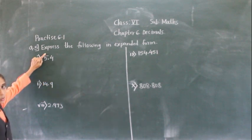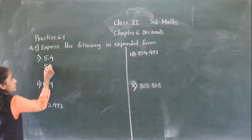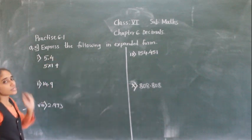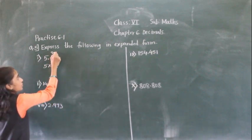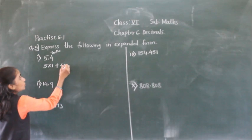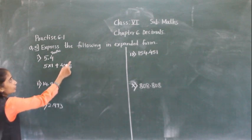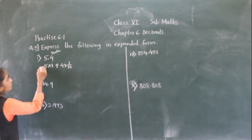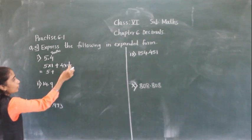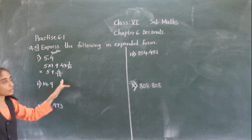Now, 5 is at which place? 5 is at the ones place, so 5 into 1. Plus — now 4 is at which place? 4 is at the tenth place, so 4 into 1 upon 10. So how are we writing this? 5 into 1 is 5, plus 4 into 1 upon 10 means 4 upon 10. This is the expanded notation for this given number.